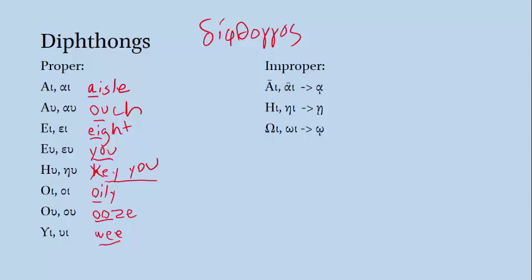We also have three improper diphthongs. Each improper diphthong is composed of a long vowel followed by an Iota, and what they have in common is that eventually the Iota stopped being pronounced. In an improper diphthong we have a special way of writing the Iota called an iota subscript — the Iota is just written as a little tail underneath the vowel. When we pronounce these diphthongs we'll just tend to pronounce the first letter, which is always a long vowel: Alpha, Eta, or Omega. Remember though that the iota subscript is a medieval convention — the classical Greeks always wrote it on the line, which we call an adscript, and they pronounced both letters in the diphthong. In your book you'll see the Iota written subscript consistently in an improper diphthong, except when the first letter is capitalized.